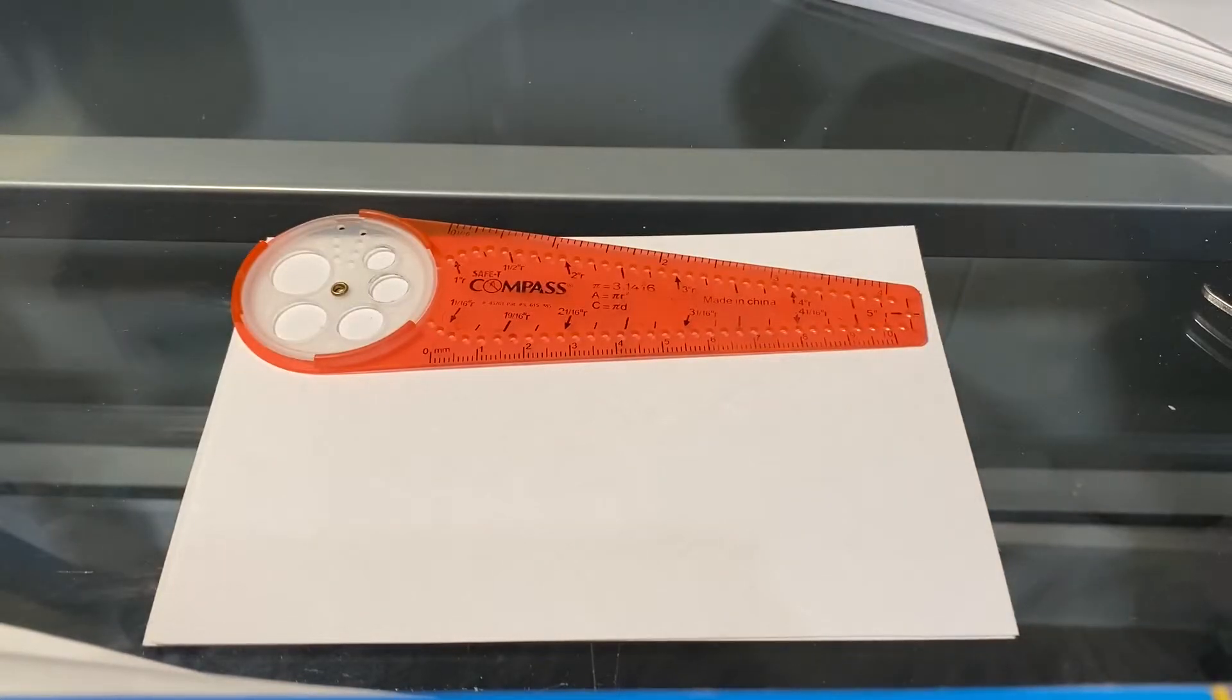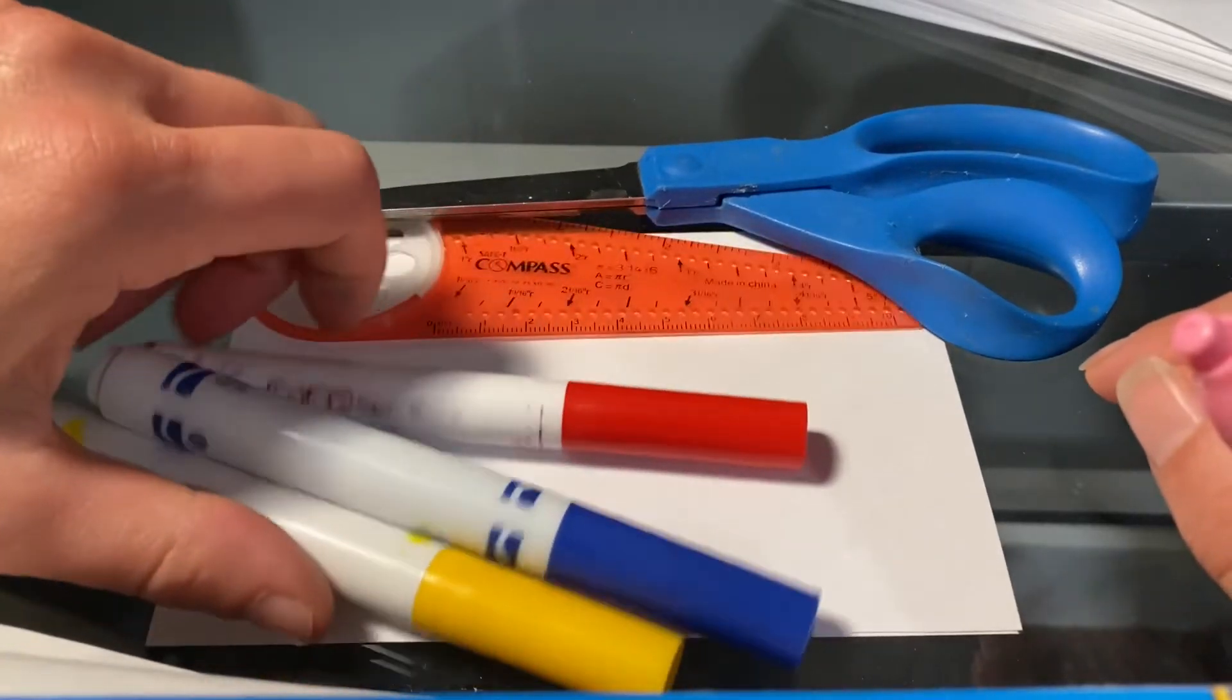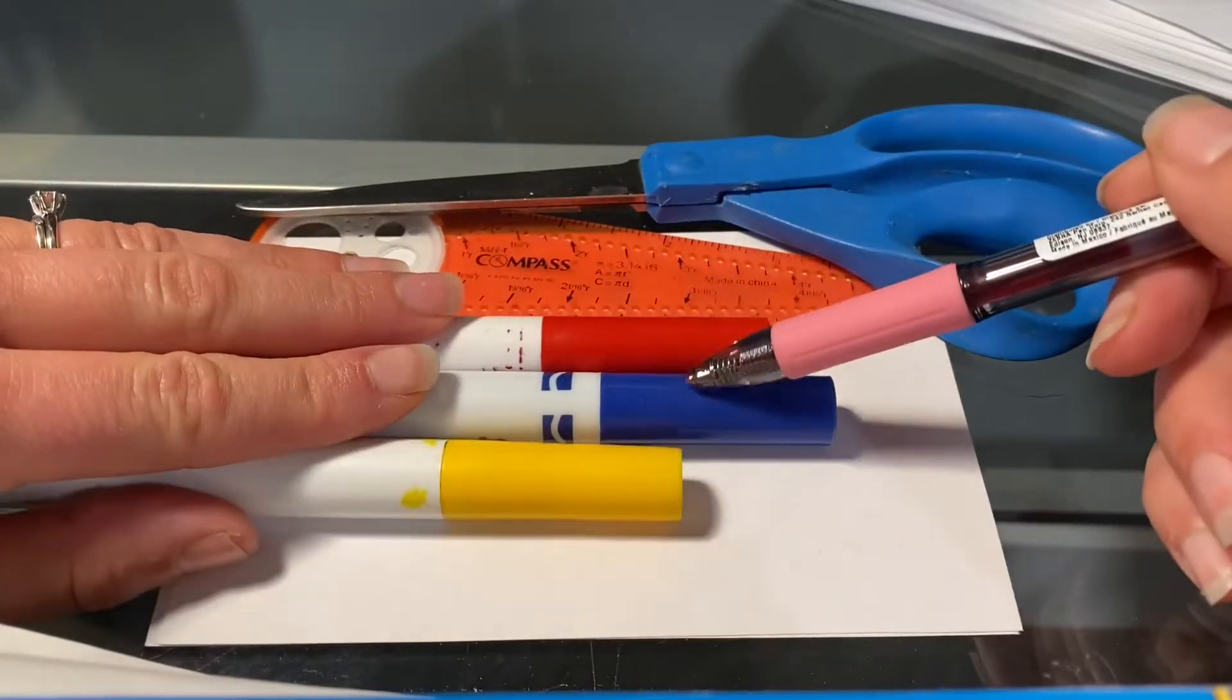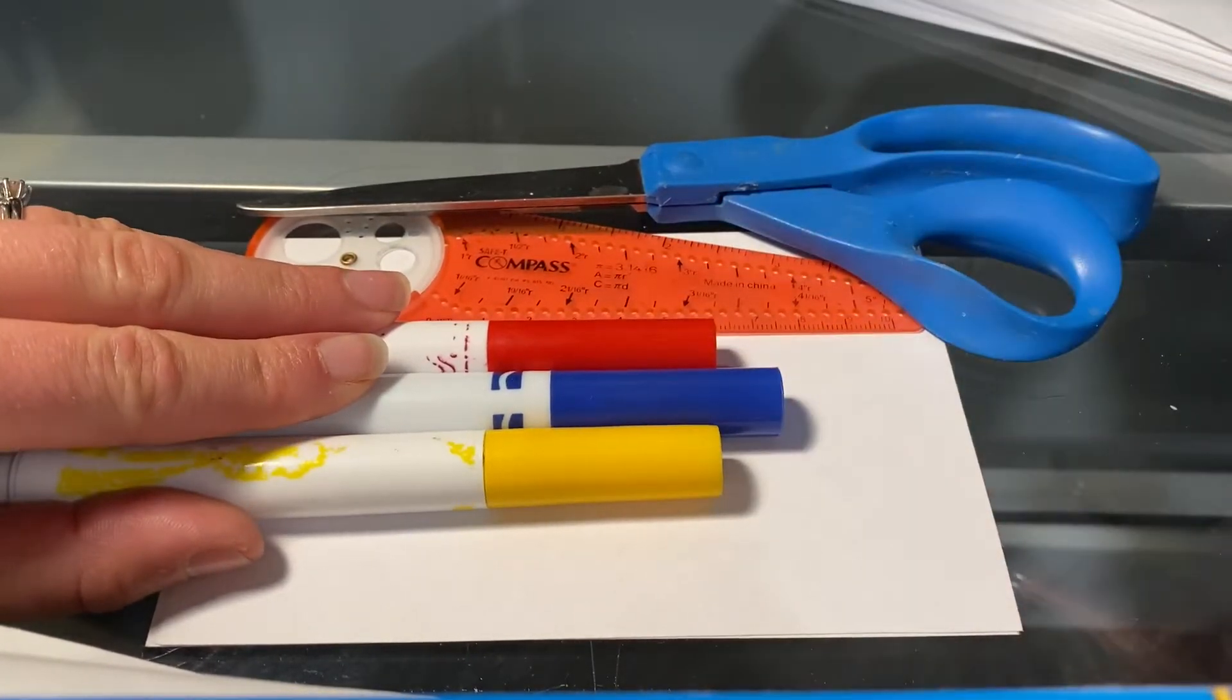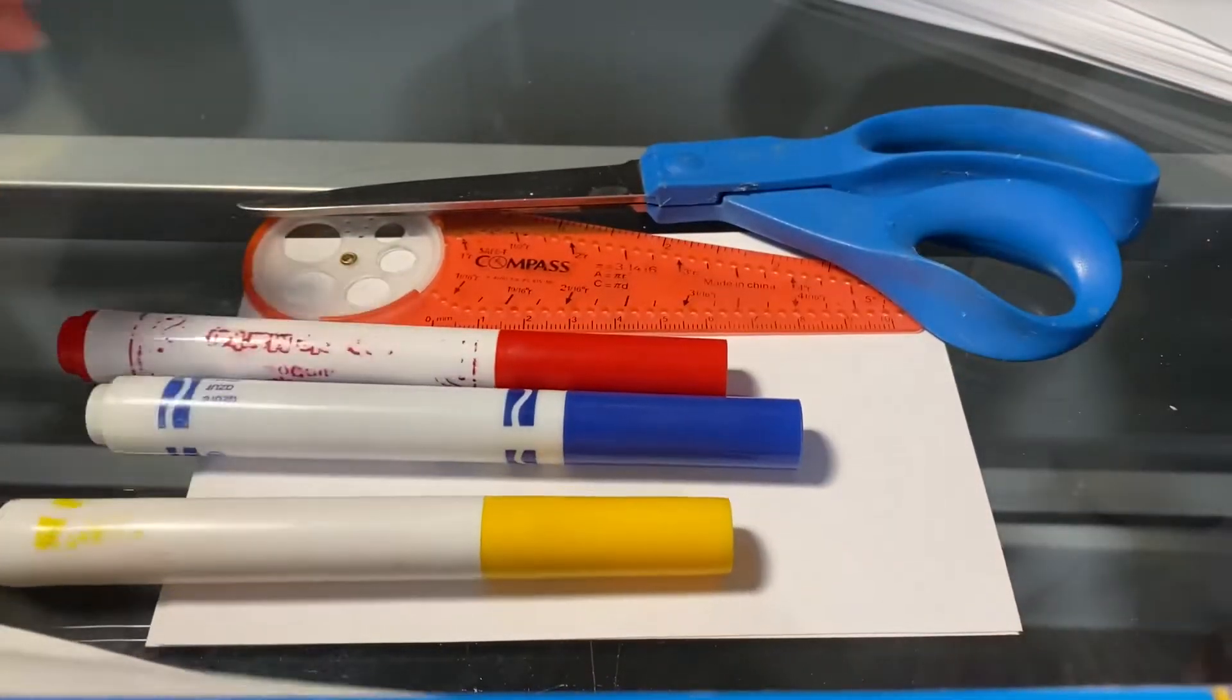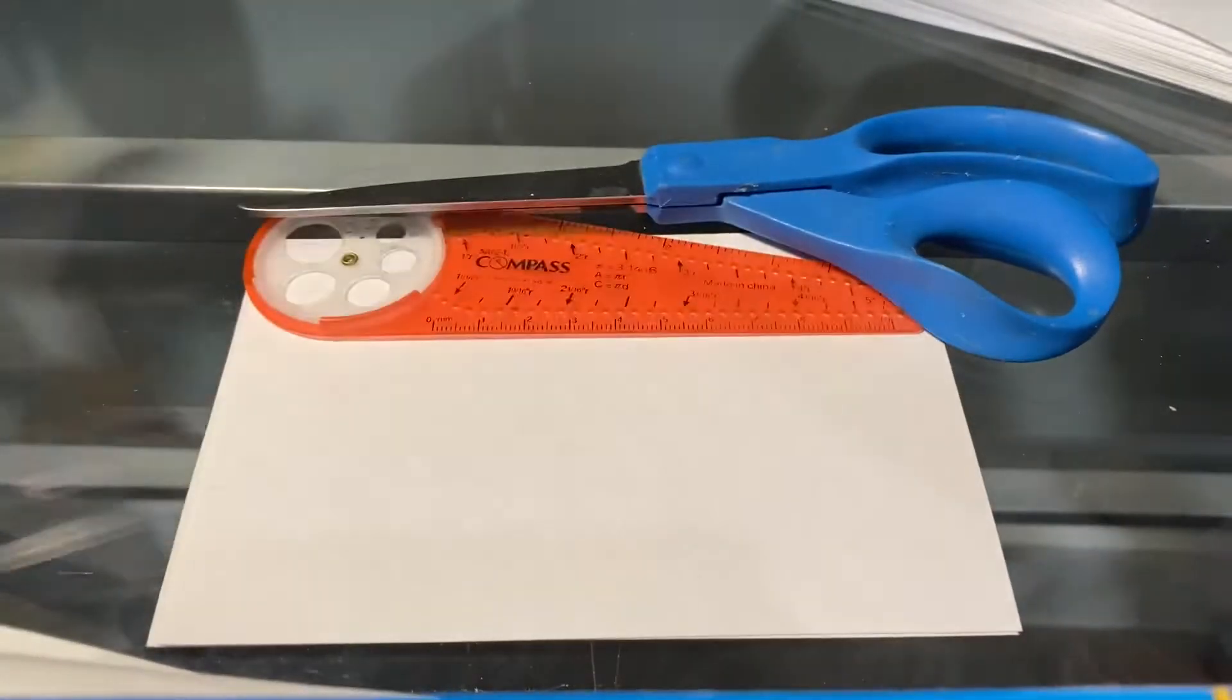A compass, we're going to use that to draw a circle. We'll need some scissors. You'll need markers. You'll need at least red, blue, and yellow. But you can grab a couple more colors, but these three you're definitely going to need. These are our primary colors, the ones we use to make other colors.